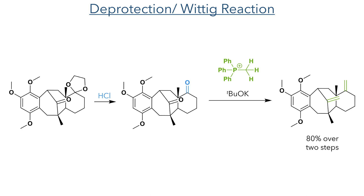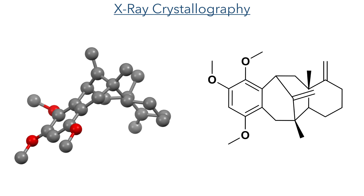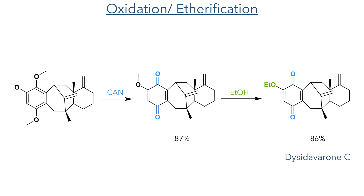As we saw earlier, hydrochloric acid was used to deprotect the acetal, and a Wittig reaction was used to install the exocyclic alkenes — this time reacting with both ketones present in the molecule, forming the target compound in an 80% yield over two steps. The structure of this intermediate was proven using X-ray crystallography, which shows a trans-fused linkage between the 6-membered ring and the 8-membered ring, with a quaternary methyl group occupying the axial position. To complete the synthesis, the aromatic ring was oxidised using CAN to produce the quinone in an 87% yield, and refluxing this in ethanol produced the target in an 86% yield.